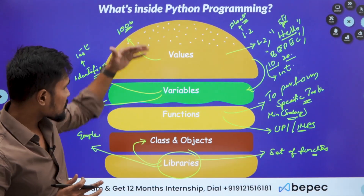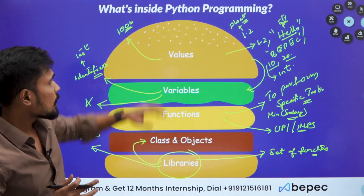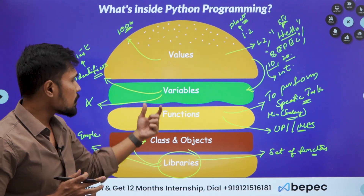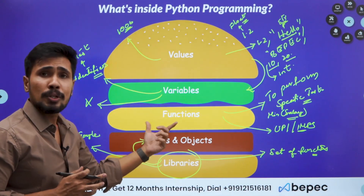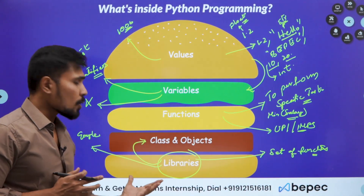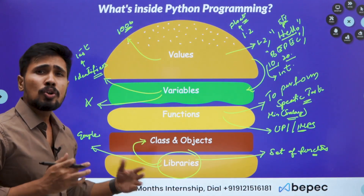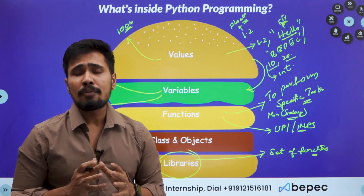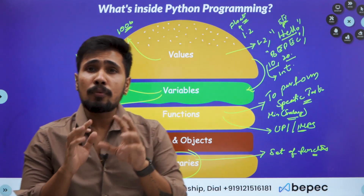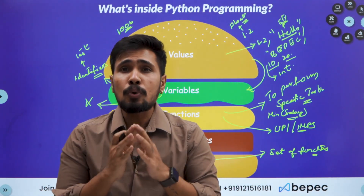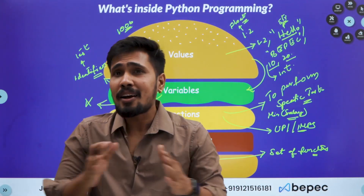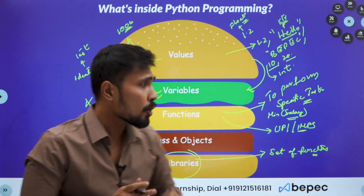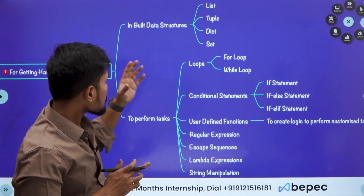So this is the overall structure of your Python programming. Python comprises of five elements: values, variables, functions, class and objects, and libraries. Now, what are the different libraries we have, and at what level of Python knowledge we want to reach as a data scientist — that is very important. Let's understand about it.